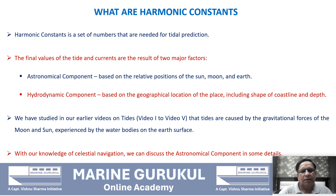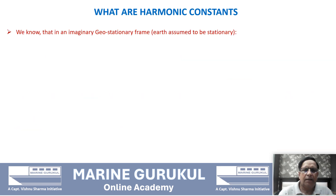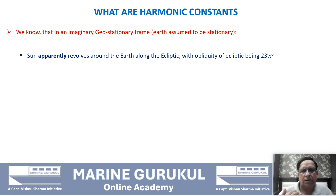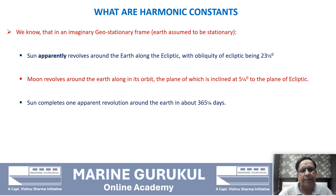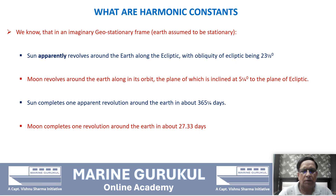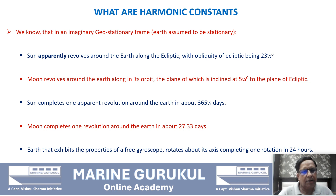With our knowledge of celestial navigation, we can discuss the astronomical component in some detail. In an imaginary geostationary frame where we assume the Earth to be stationary, the sun apparently revolves around the Earth along the ecliptic, with the obliquity of the ecliptic being 23.5 degrees. The moon revolves around the Earth along its orbit, whose plane is inclined at about 5.25 degrees with the plane of the ecliptic. The sun completes one apparent revolution in about 365.25 days, the moon in about 27.33 days, and the Earth rotates about its own axis completing one rotation in 24 hours.